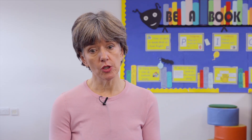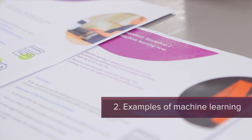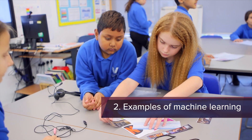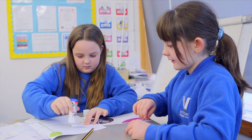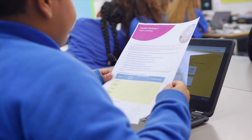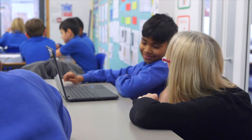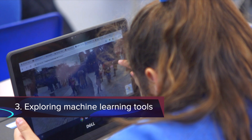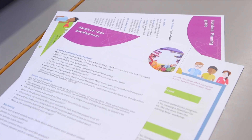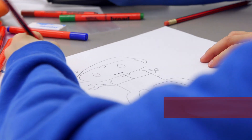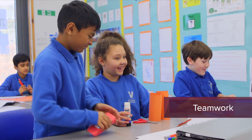The second workshop looks at some examples, such as Netflix, looking at how it makes choices and getting them to start to think about the process that's behind that. The third workshop is playing with some of the machine learning tools that are being developed at the moment, giving them a core understanding, and then the idea is for them to work in a team and come up with a machine learning tool.